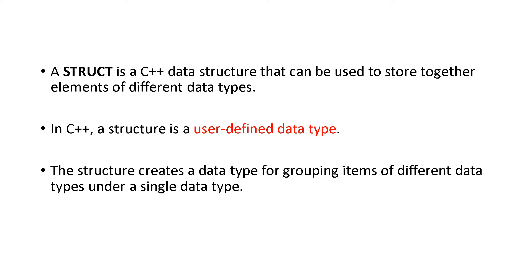We know what is an array. An array is a homogeneous set of elements. Structure, on the other hand, creates a data type for grouping items of different data types under a single data type — that is, a structure.